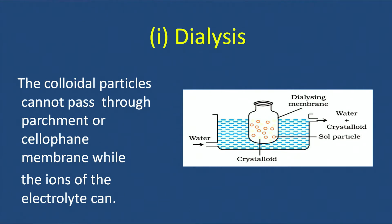The dialyzing membrane — which can be animal membrane, cellophane paper, or parchment paper — allows the solvent (dispersion medium) to pass through but not the dispersed phase. The container is immersed in a tank of water that is continuously changed: fresh water enters near the bottom and water carrying the electrolytes exits near the top, flushing out the impurities over time.